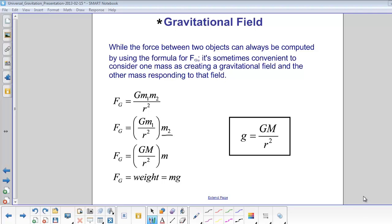Gravitational field. While the force between two objects can always be computed by using the formula for Fg, it's sometimes convenient to consider one mass as creating a gravitational field and the other mass responding to that field.